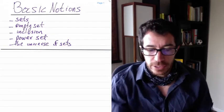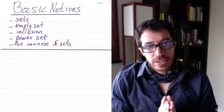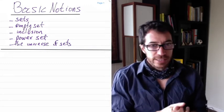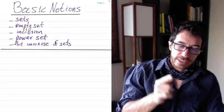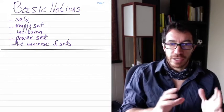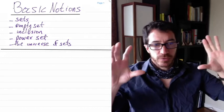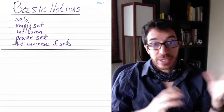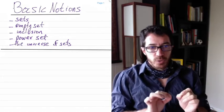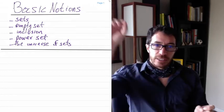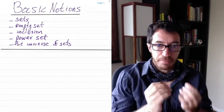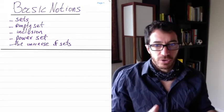Welcome everybody. Today we're going to start by developing the very basic notions. We're going to start with the axioms for Z-theory next class. The idea for this class is to develop the axioms for Z-theory, on which we're going to see how one can develop all of mathematics. But before that I want to review some very basic notions about sets, since these are going to be our building blocks - the main concept out of which we develop all other concepts.